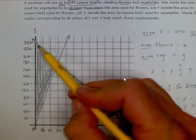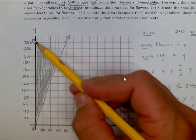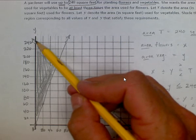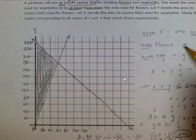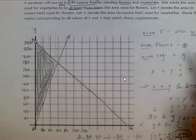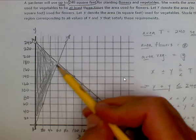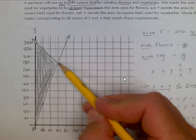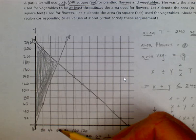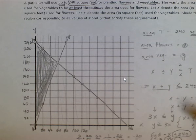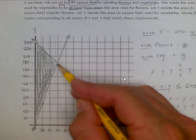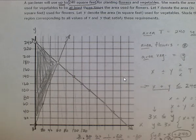He can use up to 240 square feet, and the vegetables must be at least three times the area of flowers. The point (0, 240) means zero square feet for flowers and all 240 for vegetables — which satisfies the condition since 240 is at least three times larger than 0. Where the lines intersect gives us the point (60, 180), which is exactly three times the amount. Y equals three times x at that coordinate. That's what our system of inequalities looks like.